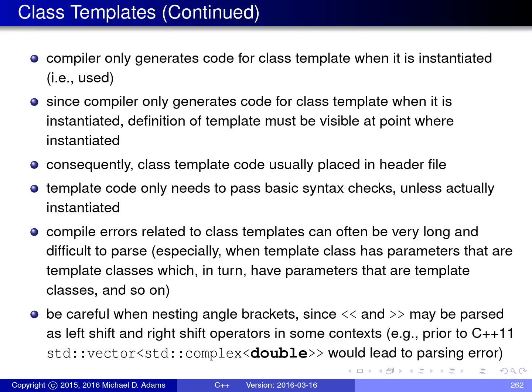The compiler only generates code for a class template at the point when it is instantiated — in other words, when it is used. For this reason, the definition of the template must be visible at the point of instantiation; otherwise the compiler won't know what code to generate. This is why class template code is usually placed into header files, though this is not always the case.